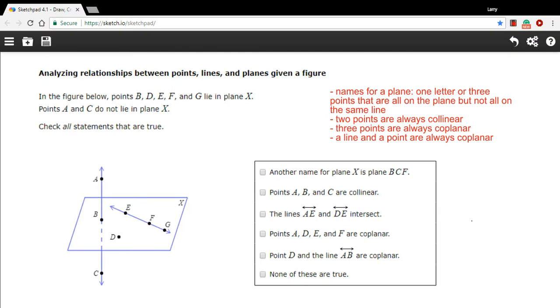In this problem, we're looking at the relationships between a set of points, lines, and a plane in this diagram here. And in case we're having a little trouble figuring it out, they're telling us that the points B, D, E, F, and G all lie in that plane.